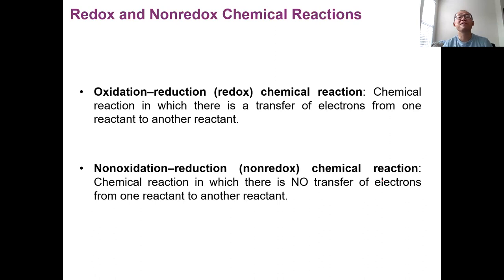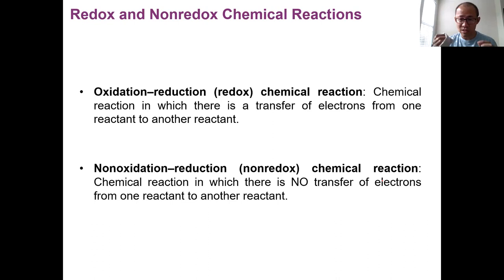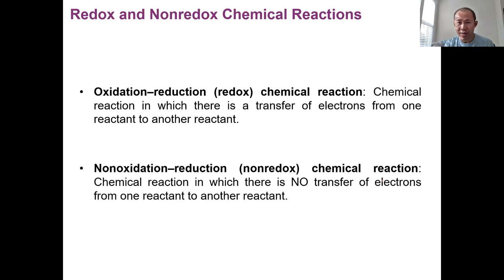There are other ways of classifying reactions. The one that is very useful is classifying chemical reactions — instead of those five basic types — into two biggest categories based on how the reaction proceeds. This way of classifying has a broader scope and is more useful because it separates all chemical reactions into two big types.